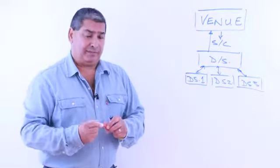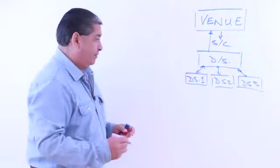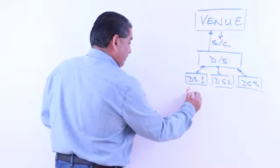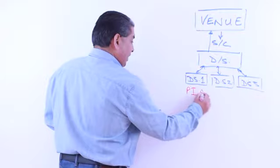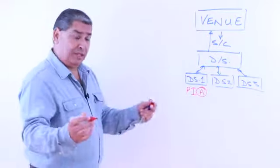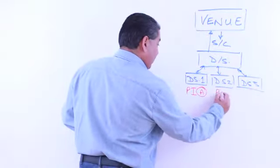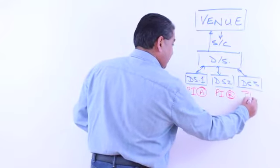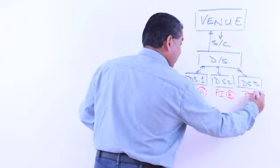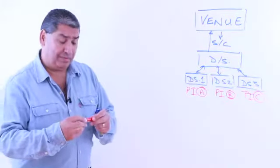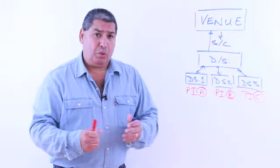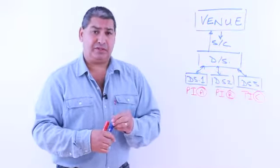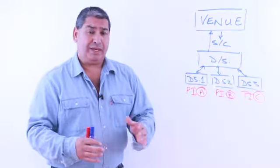Now here's the thing: what if this door supervisor has done their PI training with company A, this door supervisor has done their PI training with company B, and this one has done their PI training with a completely different company, company C? What we've got here are three different systems of restraint or intervention being used.